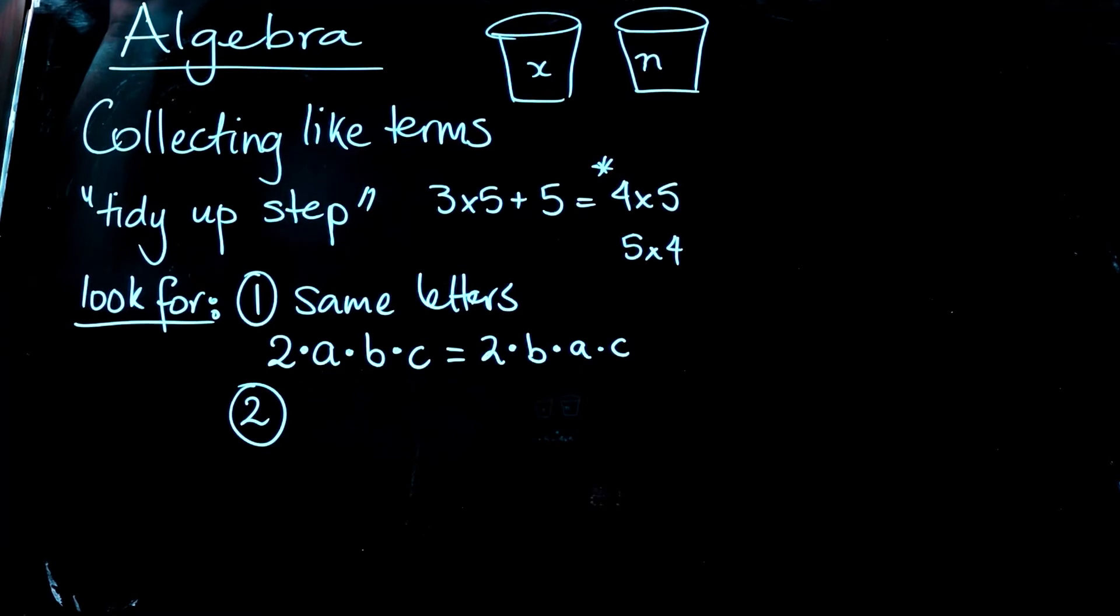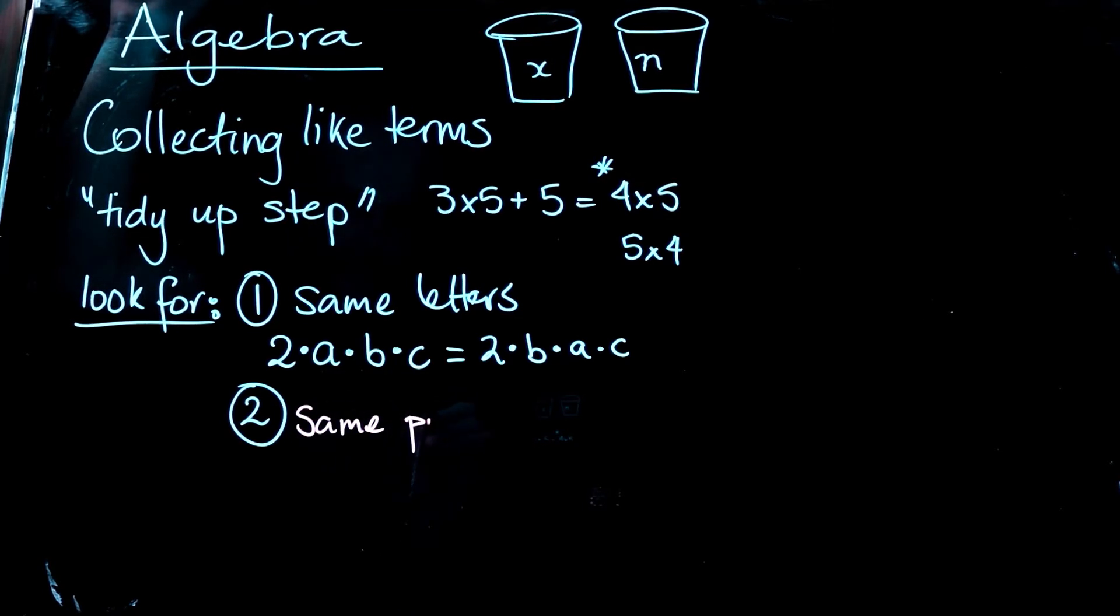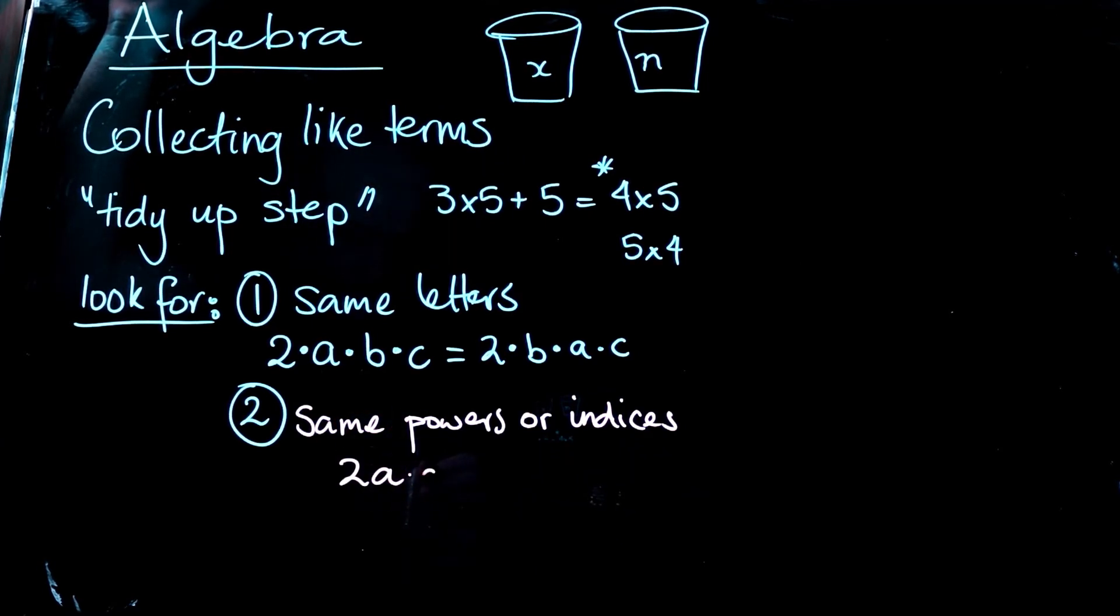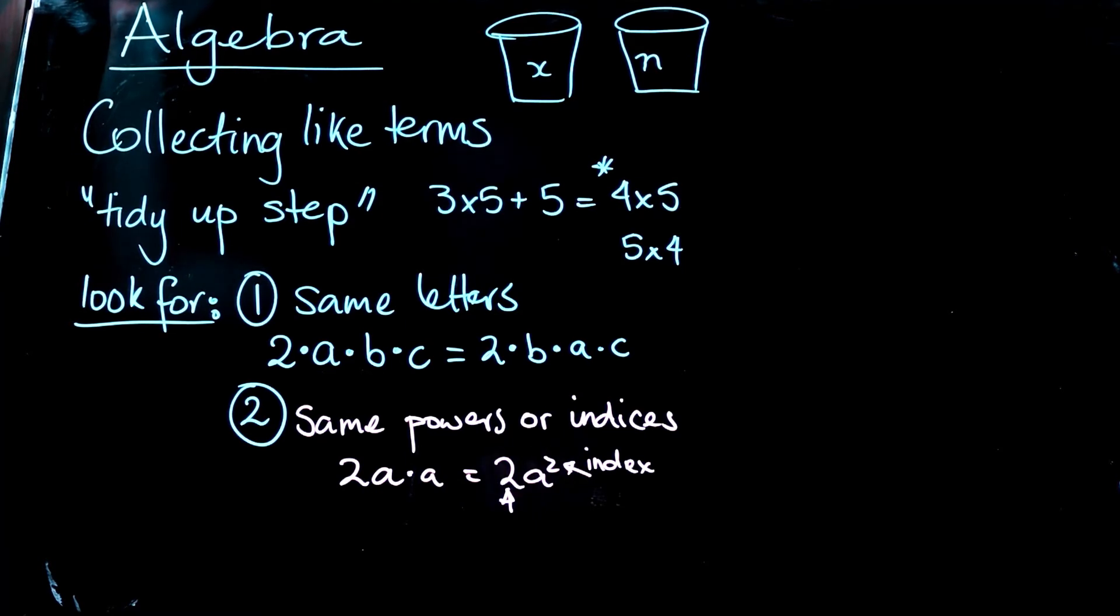But the second thing we need to look for, and it might pay to change the color on my pen. You also need to see the same powers or indices. And an example here, we've got two A times A, we might see that as two A squared. All right. This, let's not get confused with the coefficient here. We want the index here, and the index is a two, meaning that this A, whatever the pronumeral is, we've got A times A.